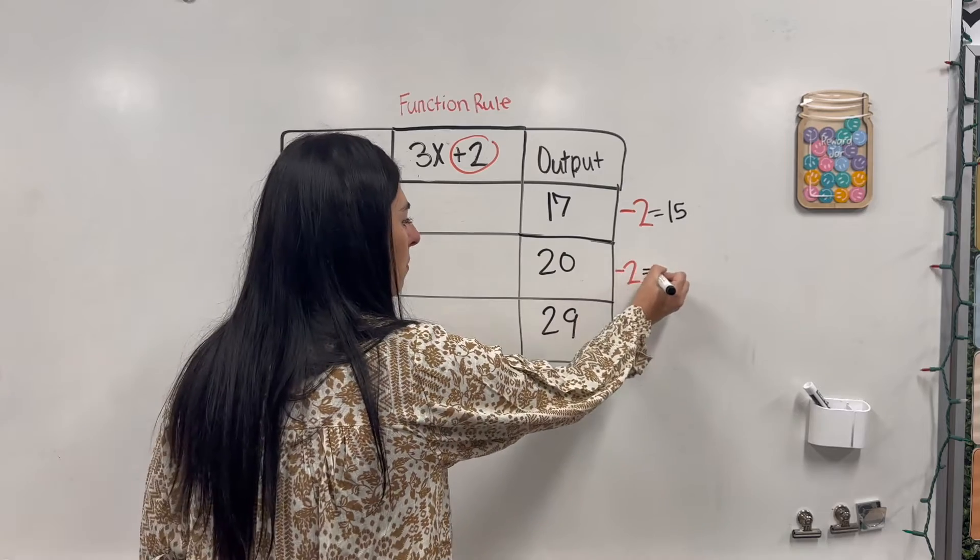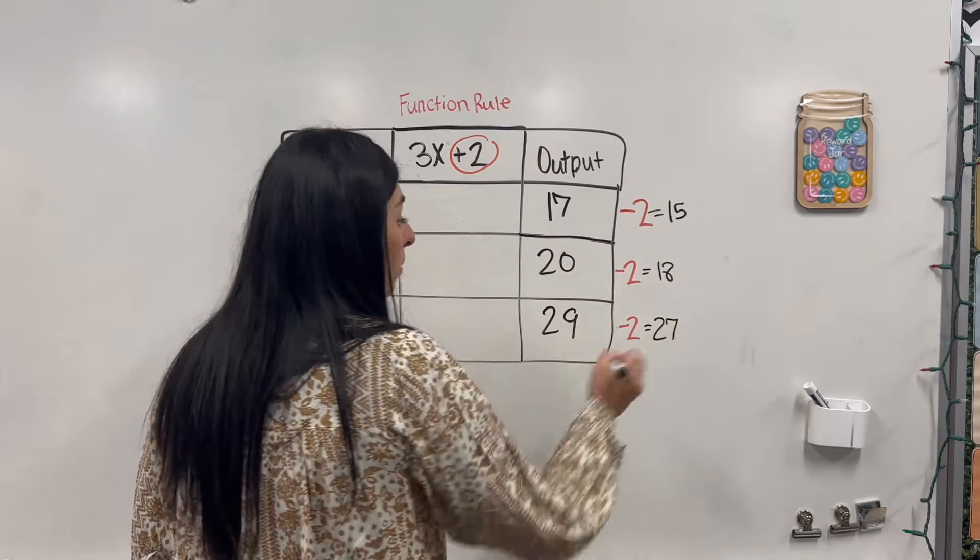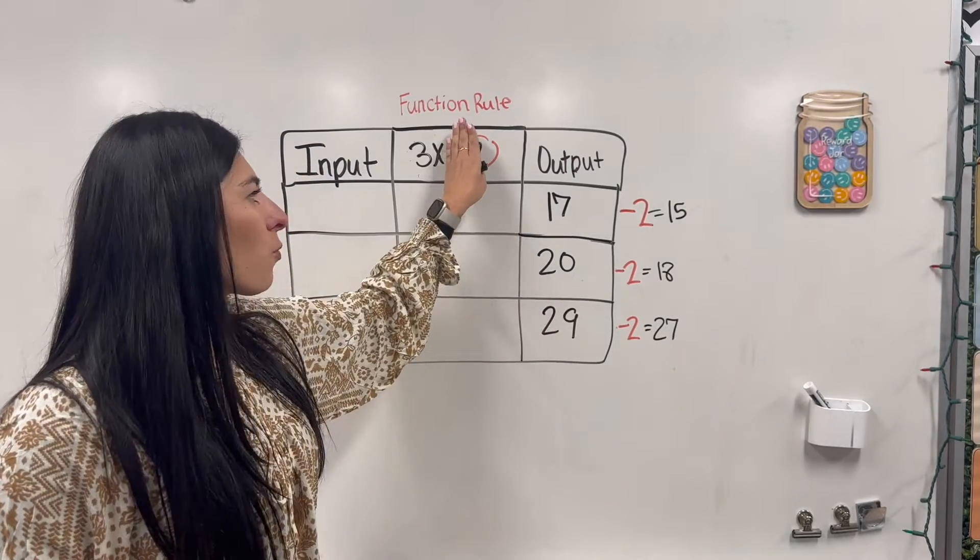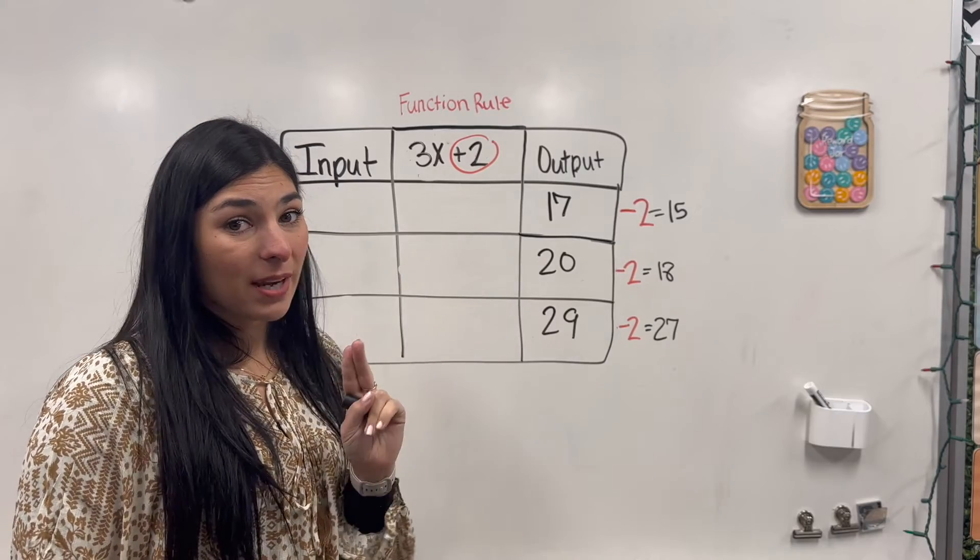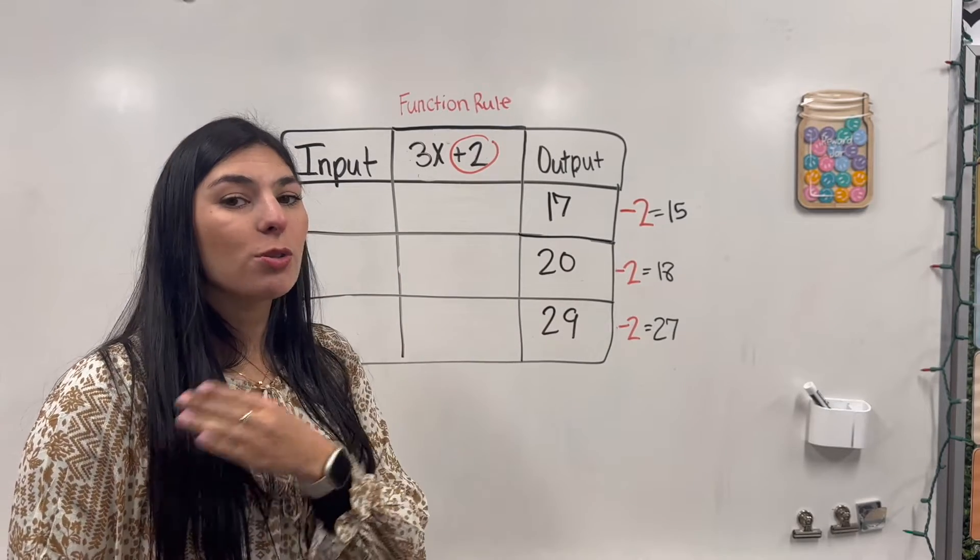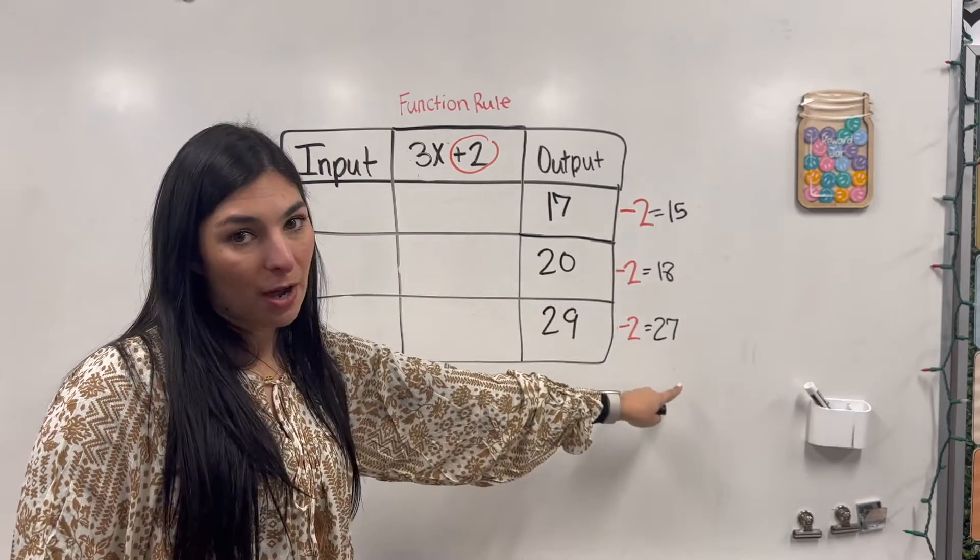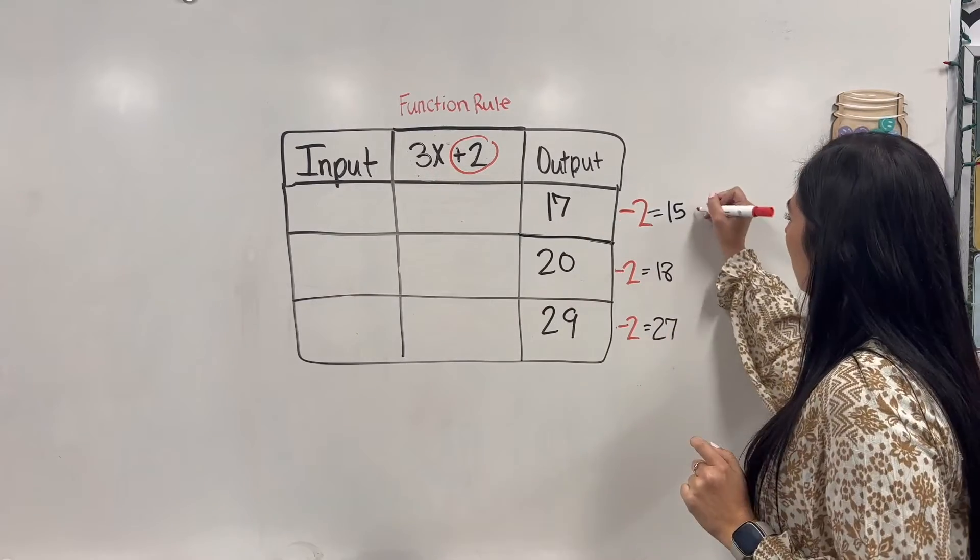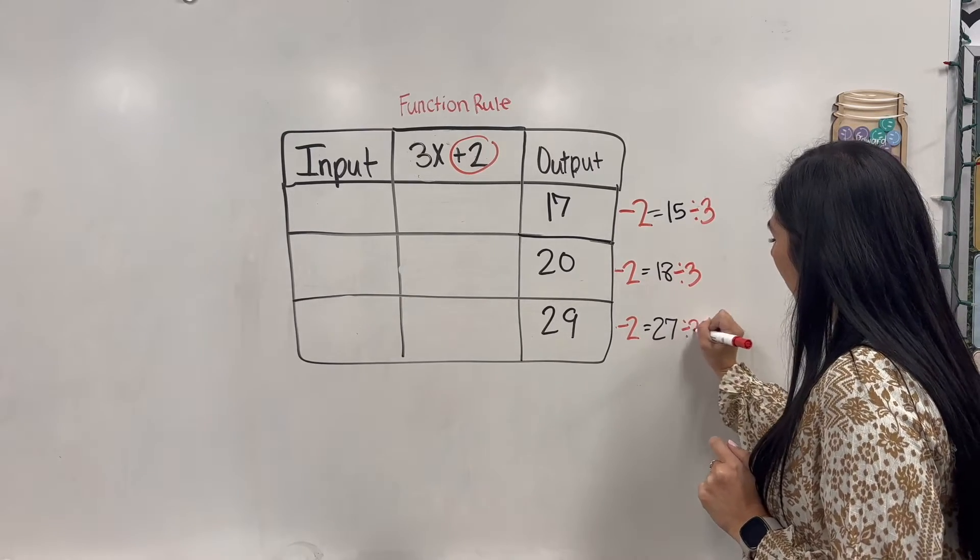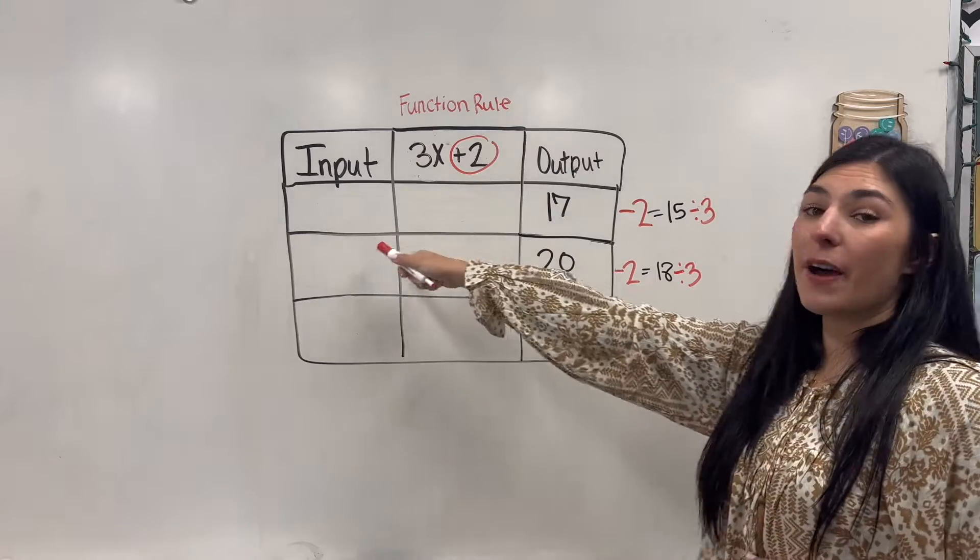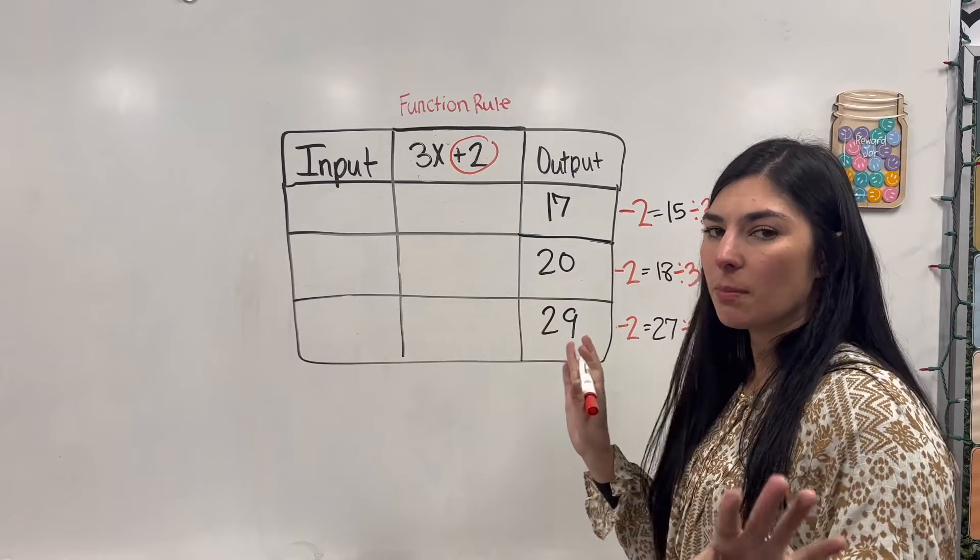20 take away 2, 18. 19 take away 2, 27. So from here, that means I got rid of this plus 2 and now I'm only working with a 3x. Because 3x together, that means multiplication, we're going to divide. But now we're not working with these outputs. We're working with our new outputs. Divided by 3x, like 15 divided by 3 for all of these. And this will give us our final input. And then we'll go back and plug in our function rule. It's just a little simpler that way.